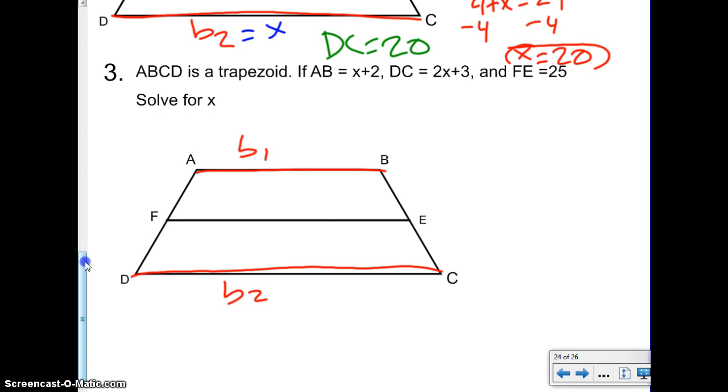And just so you know, it doesn't matter which one you label, B1 or B2, as long as you're consistent, right? Because that way you don't get confused. And then FE in the middle is our mid-segment. Well, what did they tell us? Let's see. They told us that AB is X plus 2. They told us that DC is 2X plus 3. And they told us that FE is 25.